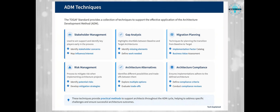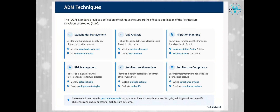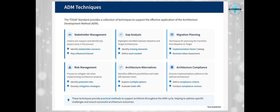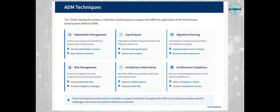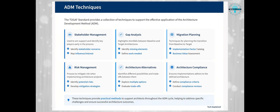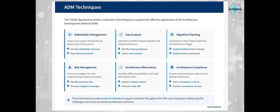The ADM provides a structured process, but TOGAF also offers various techniques to support you in applying the ADM effectively. First, stakeholder management — this is about winning support from others and identifying key players early in the process. It's crucial because architecture affects many parts of an organization, and you need buy-in from the right people to succeed. Next, gap analysis — a final step in each phase to highlight shortfalls between the baseline architecture and the target architecture. It's like drawing a line between where you are and where you want to be, then identifying what needs to be done to bridge that gap.